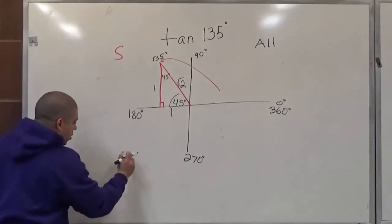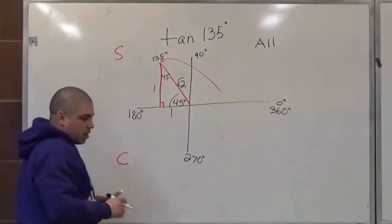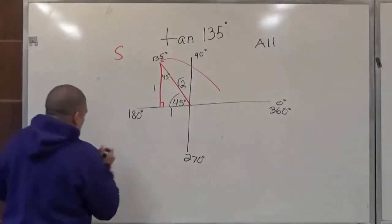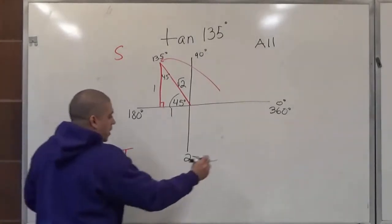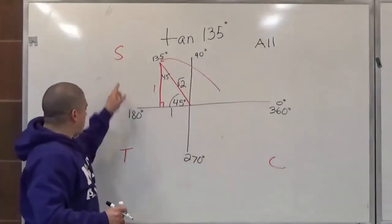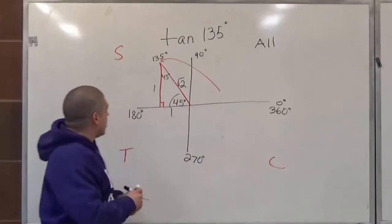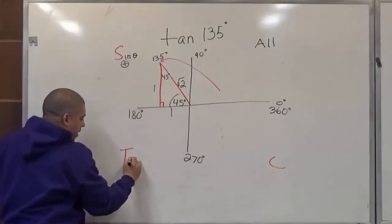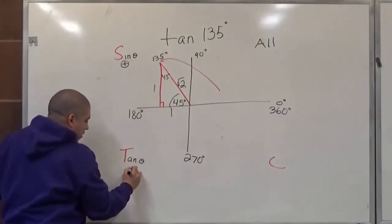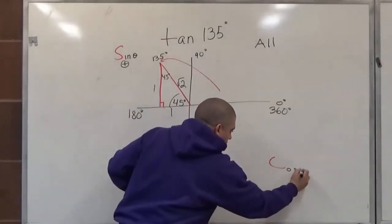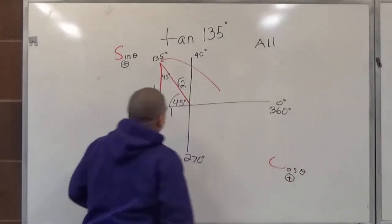And over here, only the tangent is positive. And over here, only the cosine is positive. So there's an acronym for that. All students take calculus. So what this means is that only the sine of an angle is positive in this region. Only the tangent of an angle is positive in this region. And only the cosine of an angle is positive in this region.